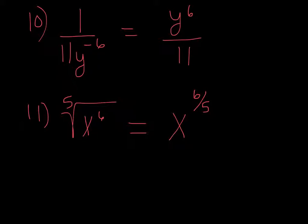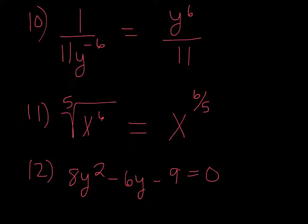Number 12, we're solving the equation 8y squared minus 6y minus 9 equals 0. So I encourage you to use the quadratic formula. And of course you can use that right in your calculators because we programmed it. And you're going to get the 2 answers of minus 3 fourths and 3 halves.